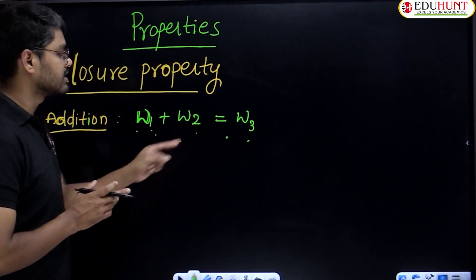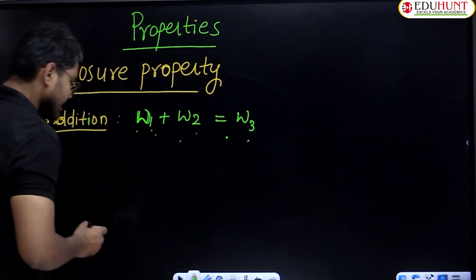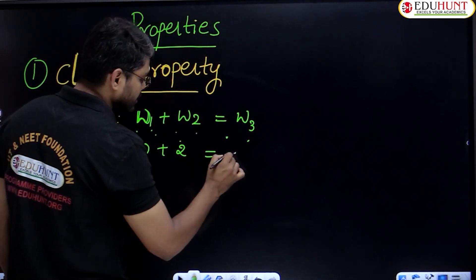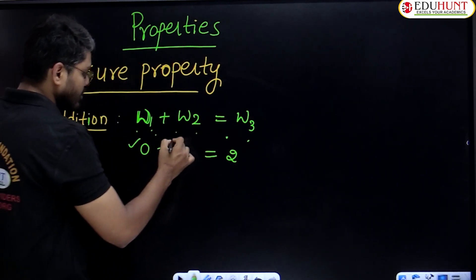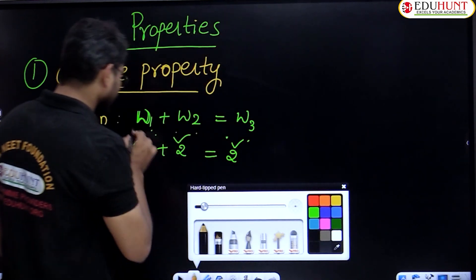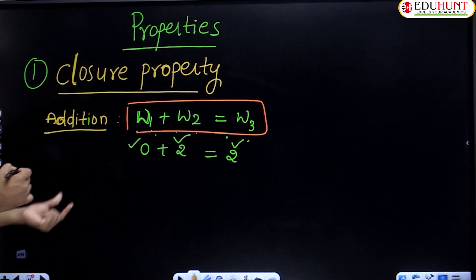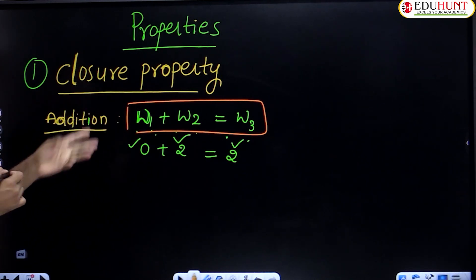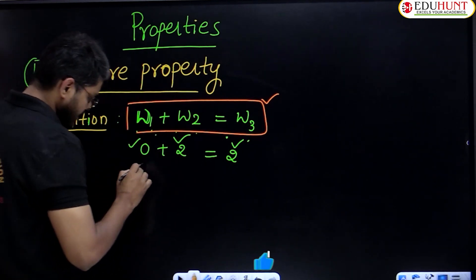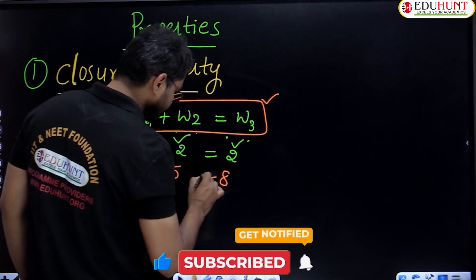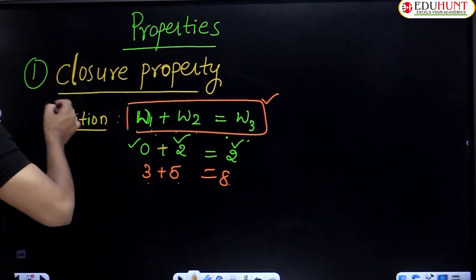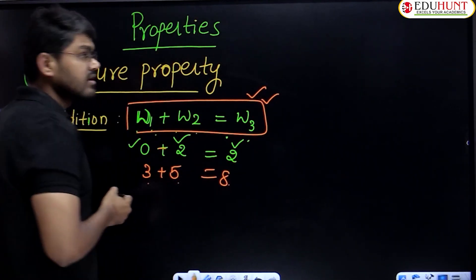Let us take examples. If it is possible, then only we put the equal to sign, otherwise not equal to. Take zero plus two — zero is a whole number, two is a whole number, and two is also a whole number. So closure property in addition is possible. Another example: three plus five equals eight. All three are whole numbers. So closure property under addition is possible for whole numbers.